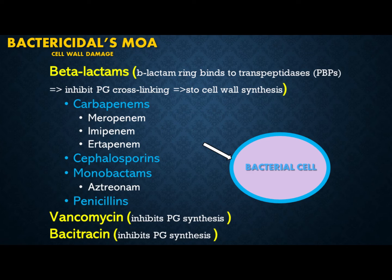Vancomycin and bacitracin also inhibit peptidoglycan synthesis, leading to bacterial death. However, bacteria have evolved and developed beta-lactamase enzymes that destroy the beta-lactam ring, rendering those antibiotics useless. In response, we developed beta-lactamase inhibitors — clavulanic acid, sulbactam, and tazobactam — which block the bacterial beta-lactamase enzymes and allow the beta-lactam antibiotics to function.